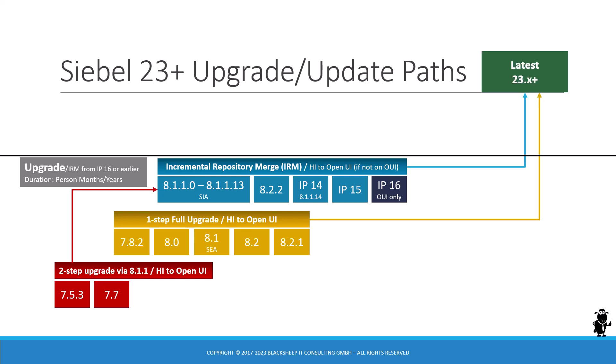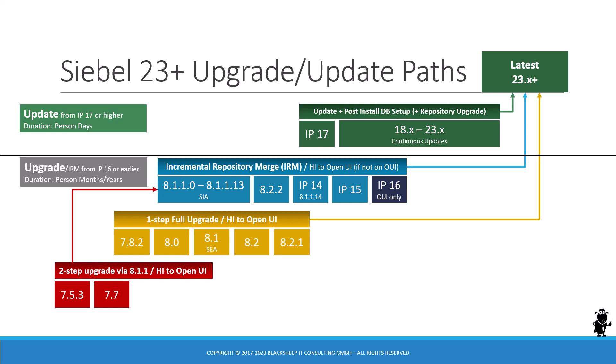Going from these older versions to the latest is a month-long project measured in person months or person years, and we're not here to cover all of it. You need to get professional help from consulting and Oracle to get your upgrade project on the way. However, if you are already on IP17 or anything higher — including 18, 19, 20 — then we talk about updates, and an update is measured in person days. It's just a matter of a few days to get your environment to the latest 23.x or higher.